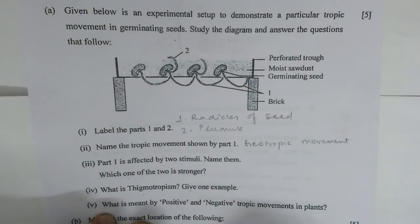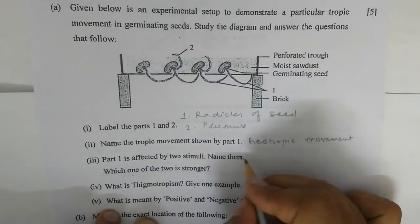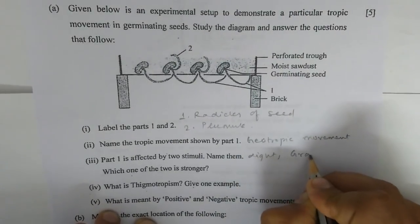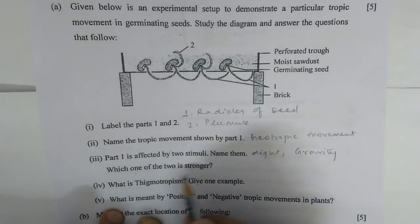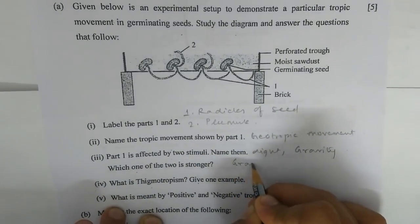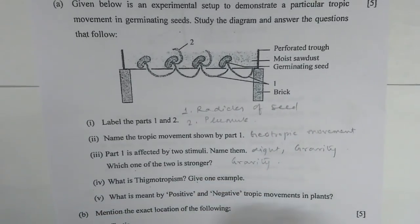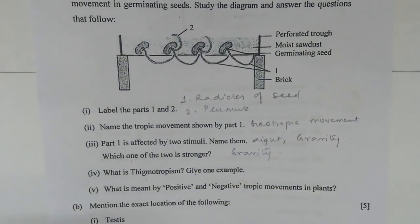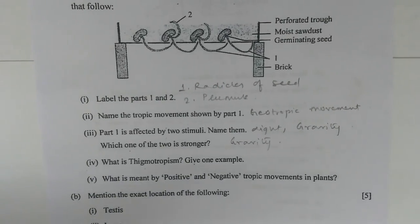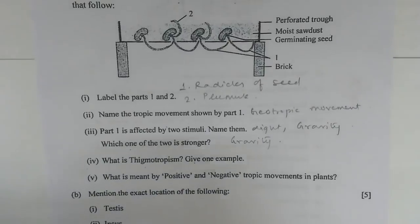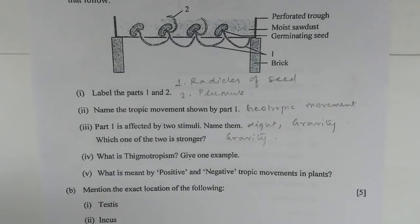Number three — part one is affected by two stimuli: light and gravity. Gravity is the stronger stimulus. Number four — what is thigmotropism? Thigmotropism is defined as the directional movement of plants in response to the stimulus of touch. One example is the touch-me-not plant.